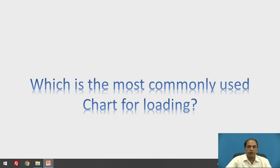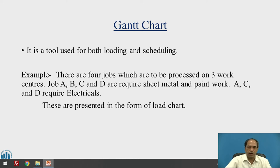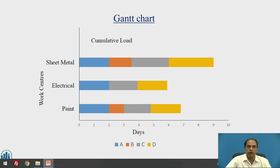Loading can be done in a variety of ways using different charts. The most commonly used chart for loading is the Gantt chart — it is a tool used for both loading and scheduling. For example, there are four jobs (A, B, C, and D) to be processed on three work centers, requiring operations like sheet metal, painting, and electricals, presented in a form called a load chart or Gantt chart.